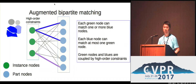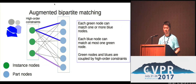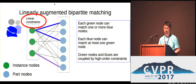It's precisely because of these high-order constraints that this problem becomes really hard. Without them, it's actually a bipartite matching problem we can solve with efficient algorithms. Unfortunately, because of the high-order constraints, this problem becomes very hard to solve, but we still want to get the global optimum. Our trick is to put some structure in the network so that we can have an efficient solution — specifically, we constrain the high-order constraints so that all constraints can be linearized, which makes them much easier to deal with than generic high-order constraints.